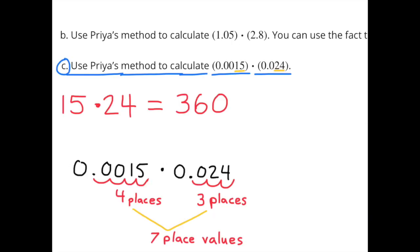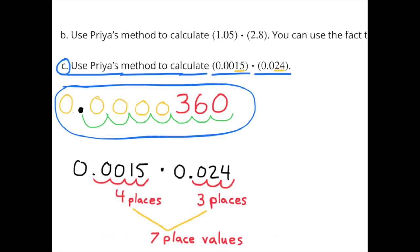Part c: Use Priya's method to calculate 15 ten-thousandths times 24 thousandths. 15 times 24 equals 360. 15 ten-thousandths would move the decimal four places to the left, and 24 thousandths would move the decimal three places to the left. So I need to move the decimal point seven place values to the left. The answer would be 360 millionths, or 36 hundred-thousandths.